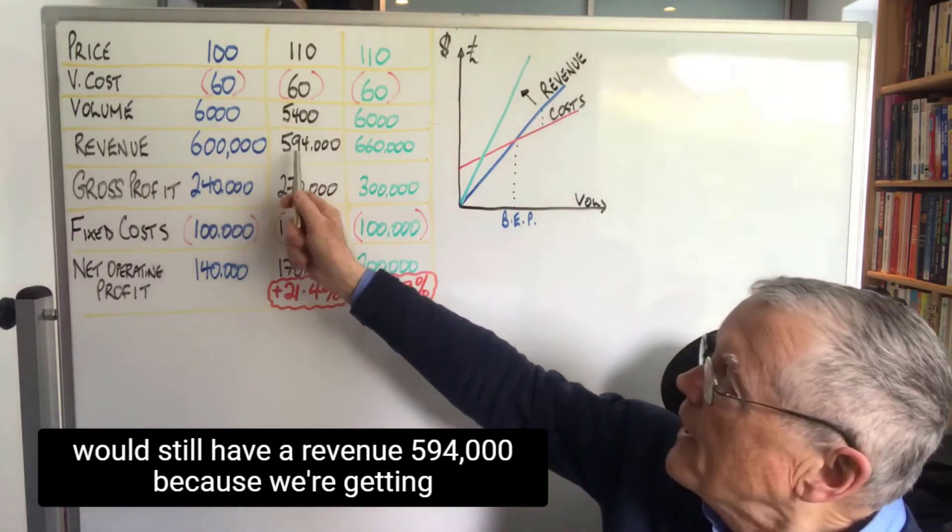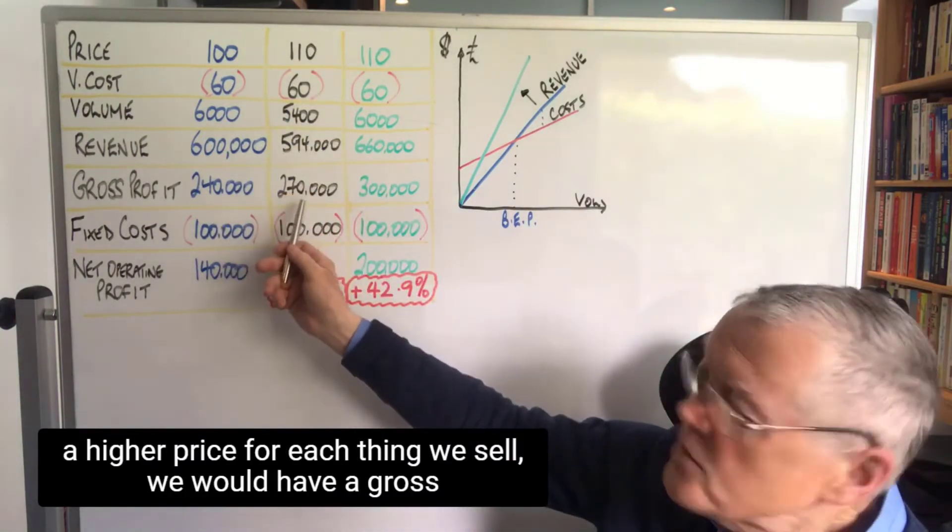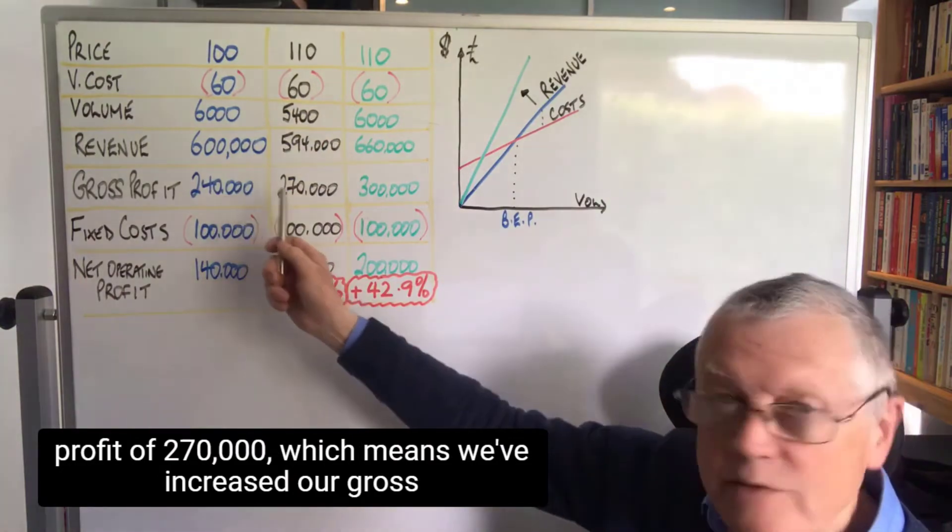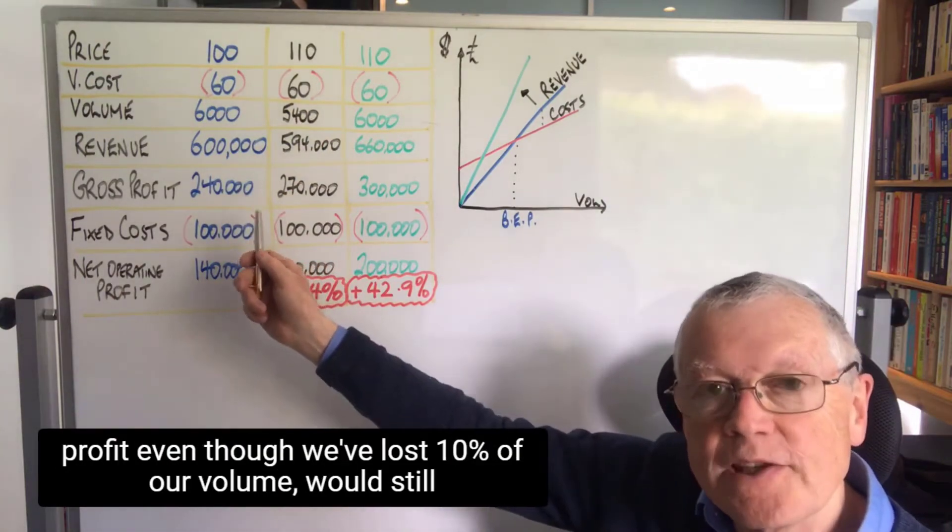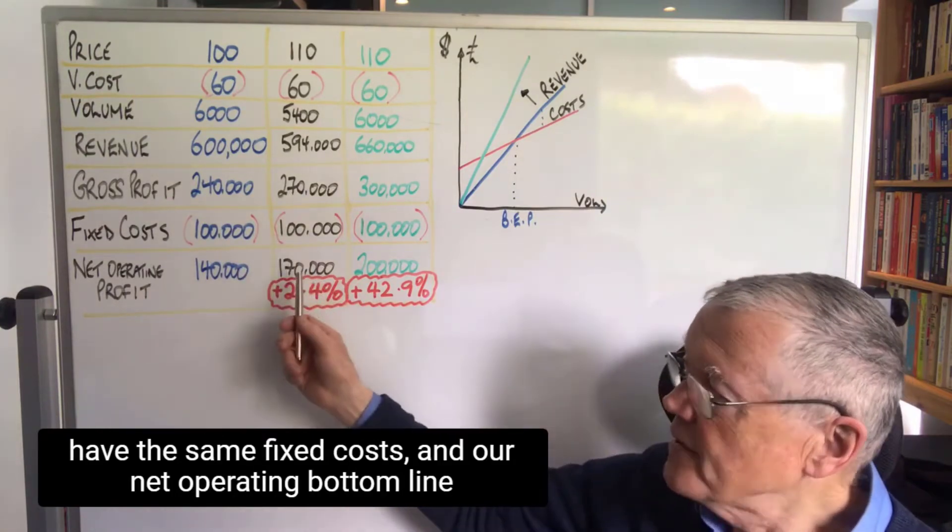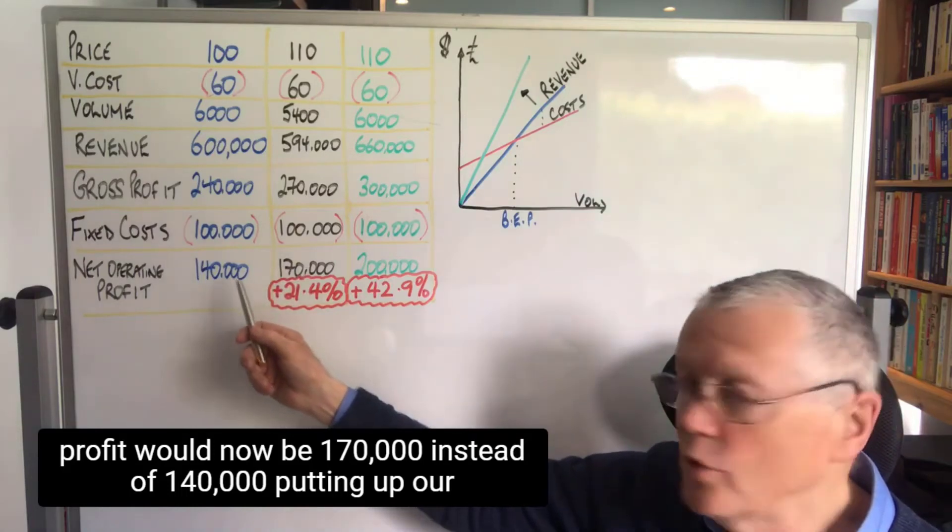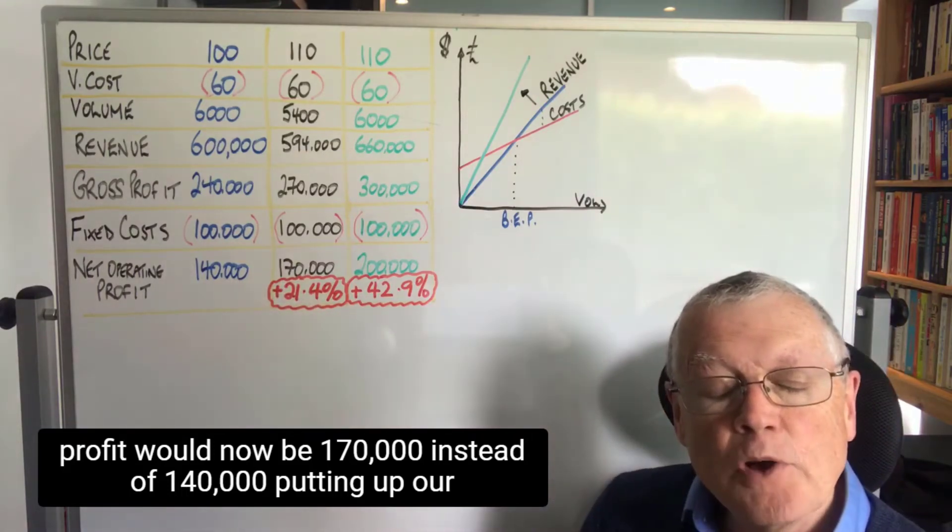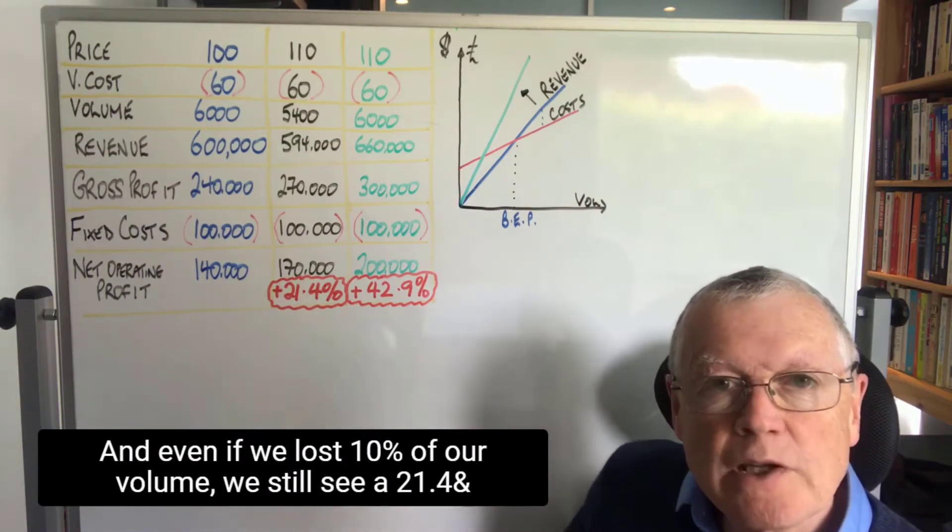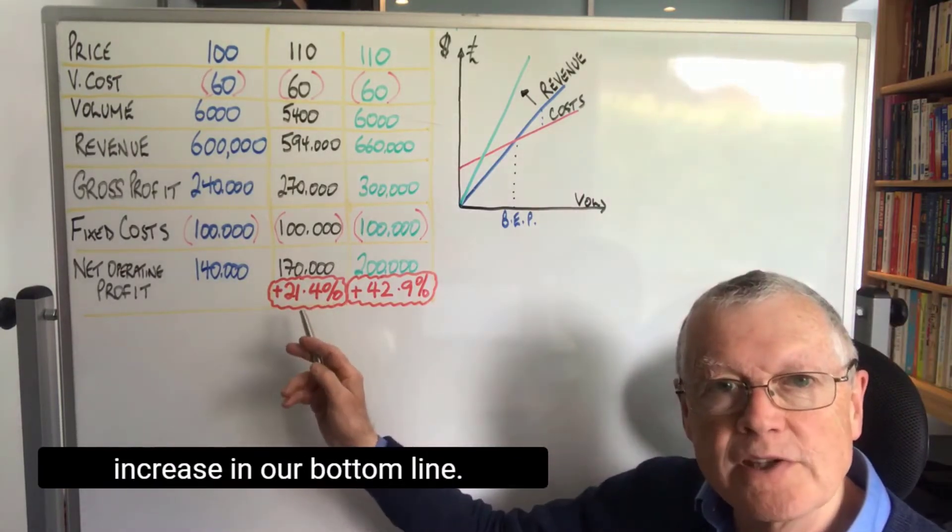We would still have a revenue of 594,000 because we're getting a higher price for each thing we sell. We would have a gross profit of 270,000, which means we've increased our gross profit even though we've lost 10% of our volume. We'd still have the same fixed costs, and our net operating bottom line profit would now be 170,000 instead of 140. So putting up our prices 10%, and even if we lost 10% of our volume, we still see a 21.4% increase in our bottom line.